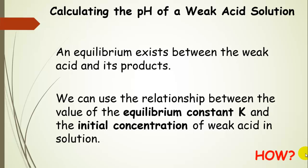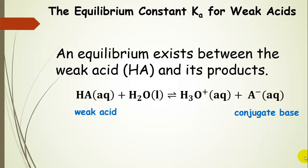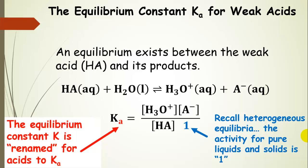How can we do this? Using the idea that an equilibrium exists between the weak acid and its products, we can use the relationship between the value of the equilibrium constant K and the initial concentration of a weak acid in solution. We have our weak acid and the conjugate base, and since we have a weak acid in solution, we're producing hydronium. We can write an equilibrium constant expression for this reaction.